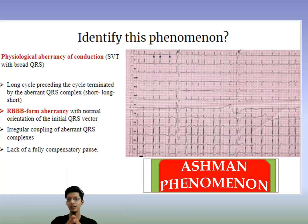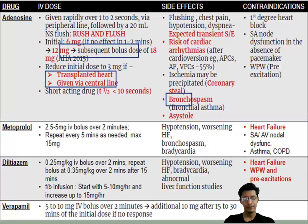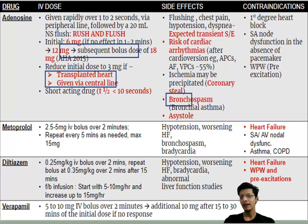That covers atrial fibrillation in short. Regarding rate control drugs in supraventricular tachycardia including AF: metoprolol is given as 2.5 to 5 mg IV bolus over 2 minutes, repeated every 15 minutes to a maximum dose of 15 mg. Be careful regarding hypotension, heart failure, bronchospasm, and bradycardia. It is contraindicated in heart failure, asthma, COPD, and AV nodal dysfunction.